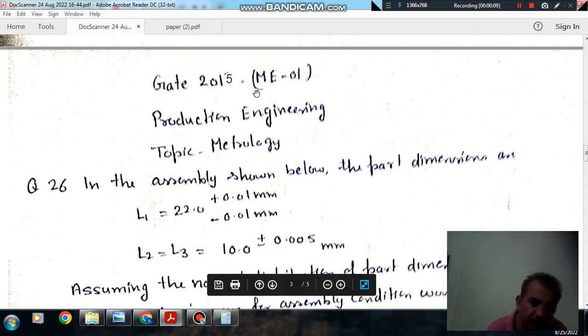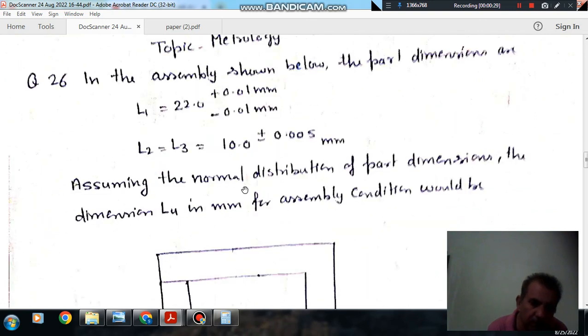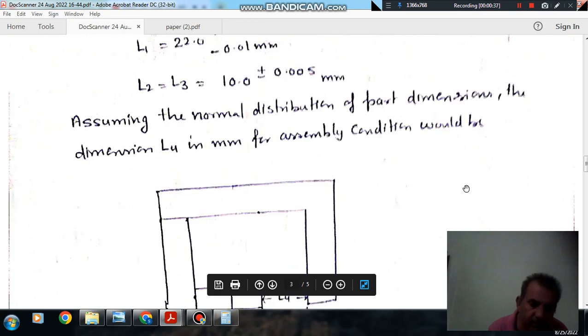Question number 26 from Gate 2015 ME01 is: In the assembly shown below, part dimensions are L1 equals 22.0 plus 0.01 mm minus 0.01 mm, L2 equals L3 equals 10.0 plus minus 0.005 mm. Assuming normal distribution of part dimensions, the dimension L4 in mm for the assembly condition would be: